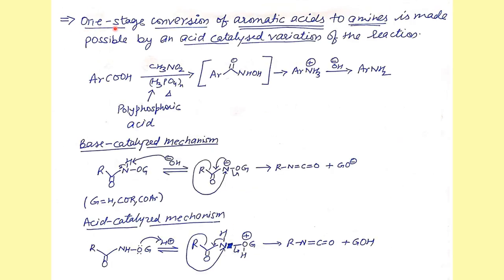In most cases, acetyl hydroxamate can be isolated and the rearrangement carried out later by treating with base. You can also start with esters — treating with hydroxylamine hydrochloride under basic conditions, then heating gives the isocyanate intermediate, and hydrolysis with water gives the amine. The mechanism involves O-acyl (or O-aryl) derivatives: the base generates a negative charge on oxygen, the R-group migrates, and the leaving group (sulfonyloxy or acyloxy) departs to give the isocyanate.